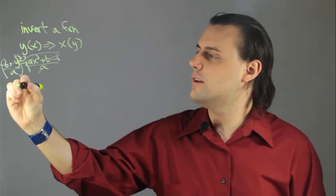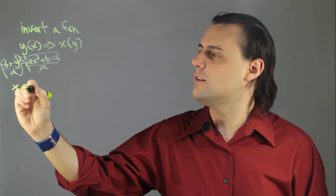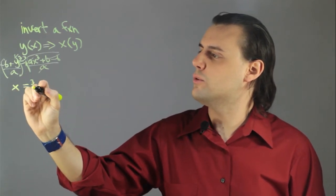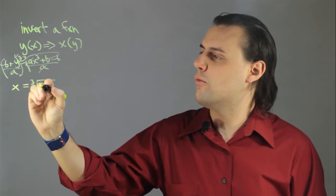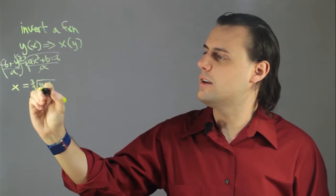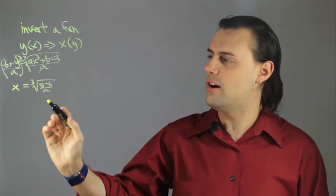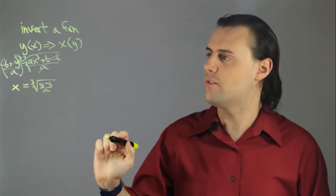So, on one side of the equation we have x, and on the other side we're left with the cube root of y minus b divided by a. So, now we have x as a function of y, and so I've inverted the system.